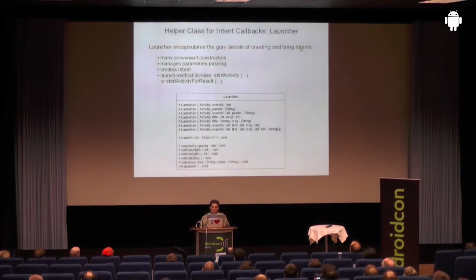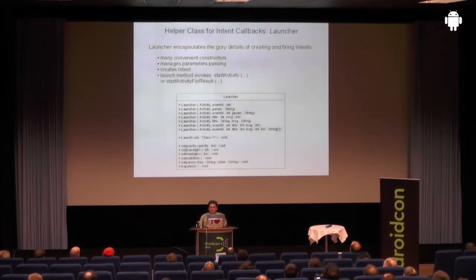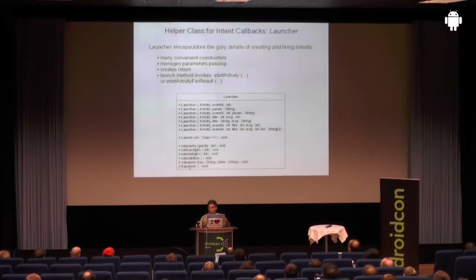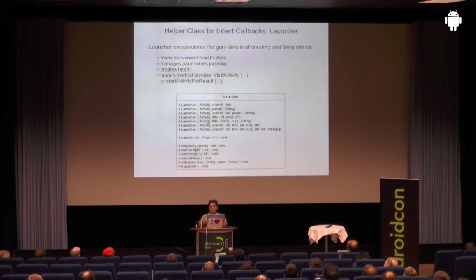I mentioned the Launcher helper class. Launcher takes a bunch of different constructors, and you can add whatever methods you want for your context. I frequently deal with maximum numbers of digits and cell phone numbers. I can specify whether to allow the user to press the back key or whether those aborts should be trapped. My point is Launcher saves me the trouble of setting up intents over and over and over.